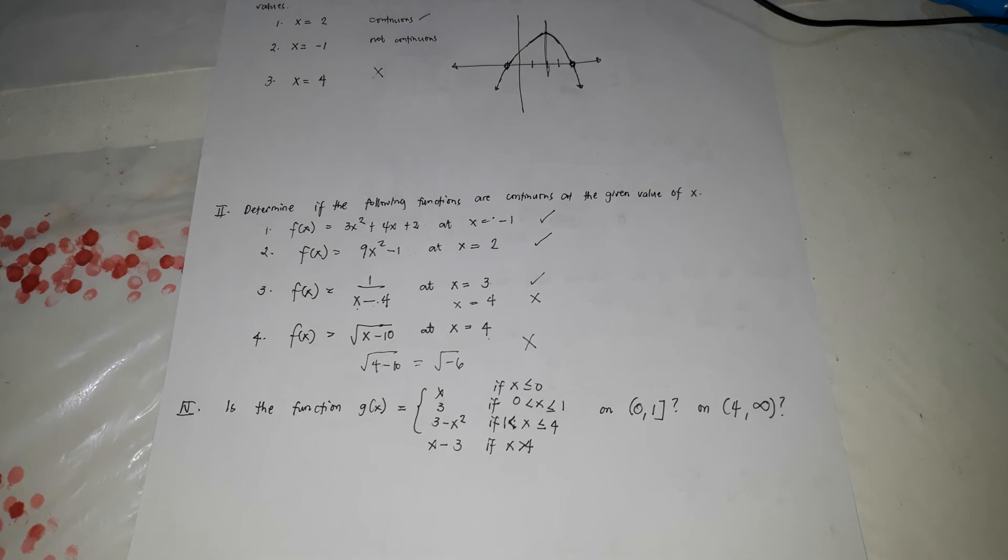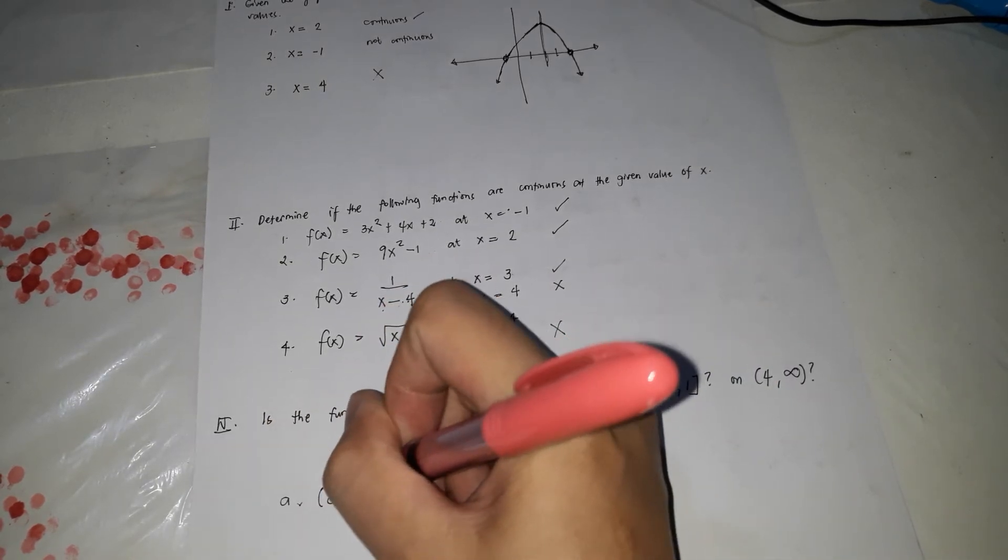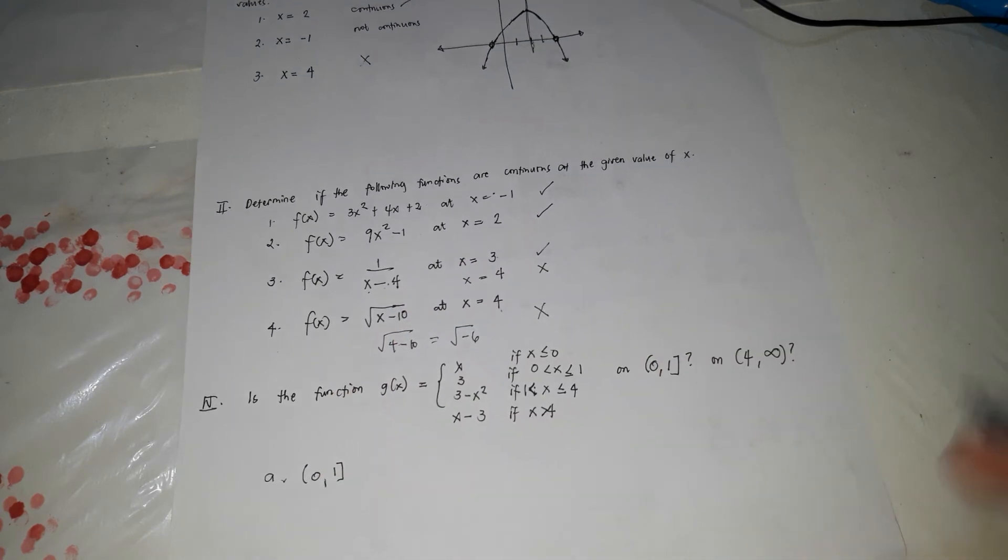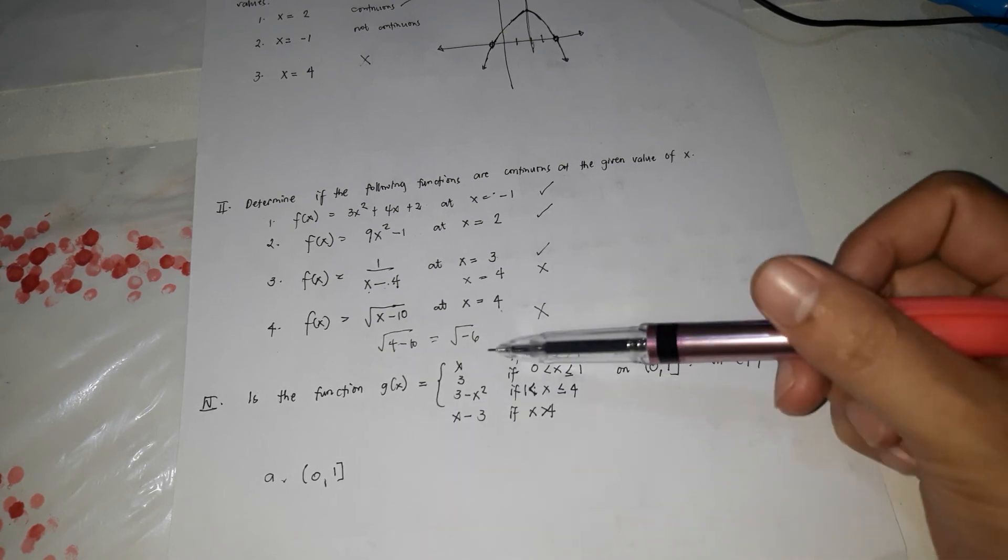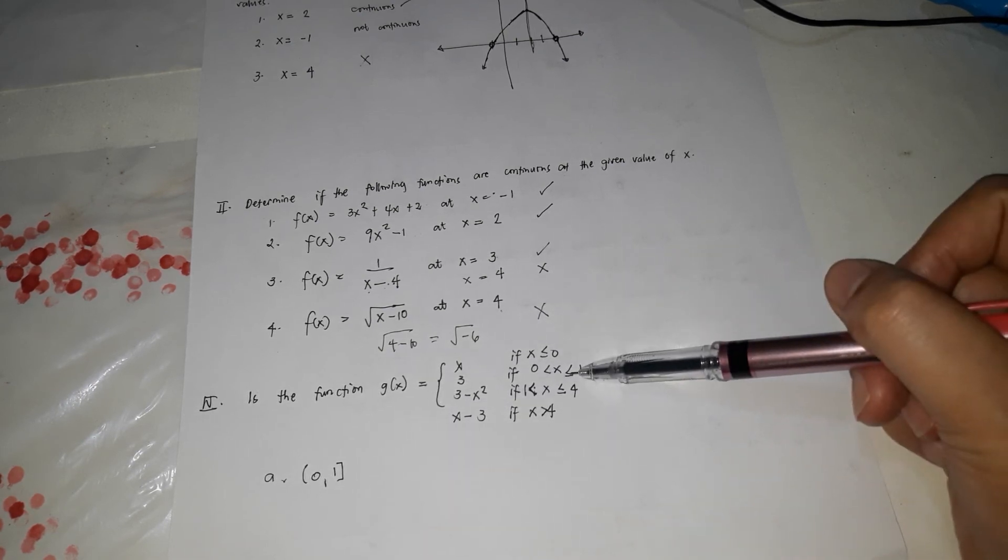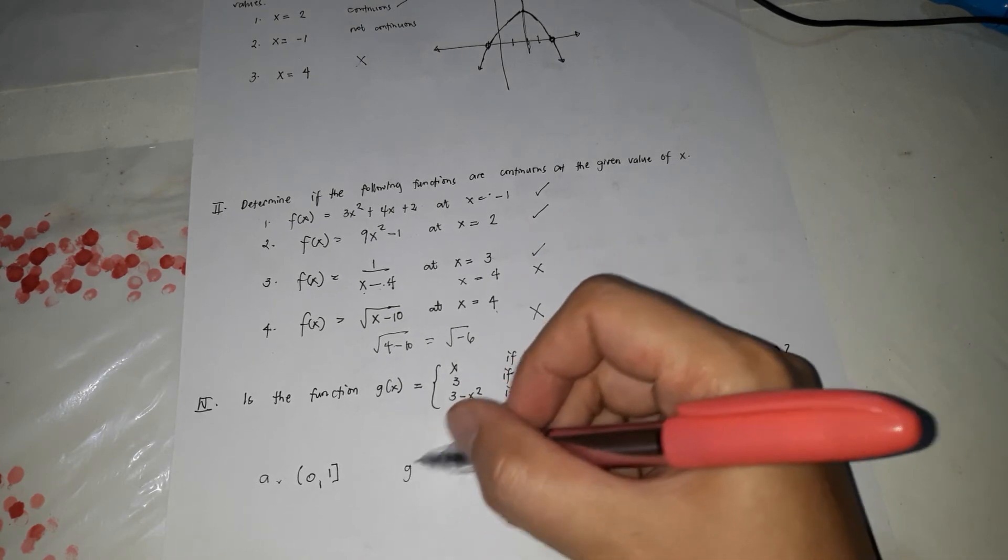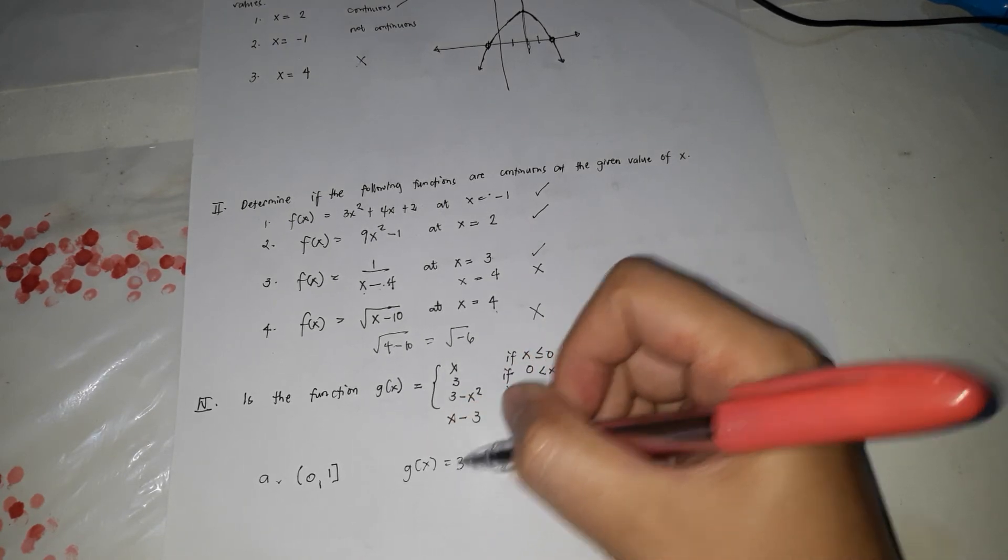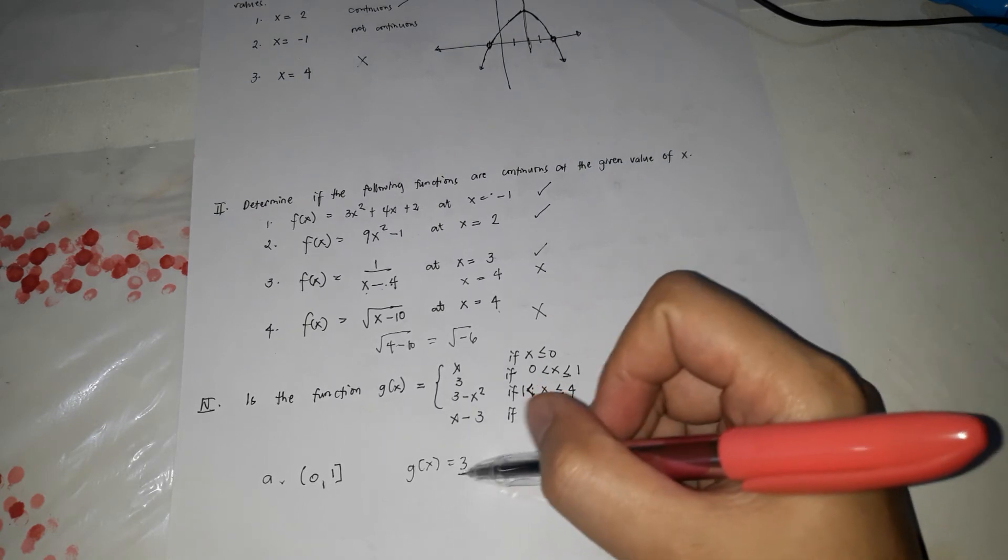So, letter A, the first interval is 0, 1. So, included in 1. So, if we're going to check the function, saan siya na-belong 0 to 1? It's in? Ito siya, 0 to 1. Then, dito siya, 0 to 1. And it's in 3. So, g of x is equals to 3. Kapag g of x is equals to 3, kapag constant siya, kapag constant dito, so,